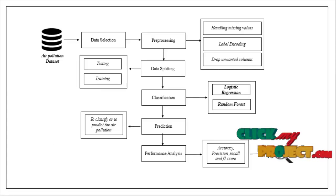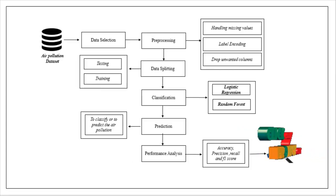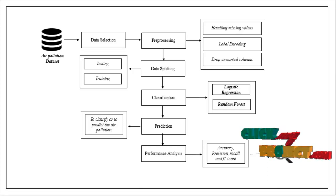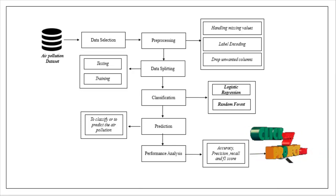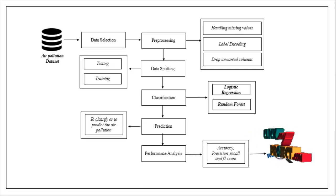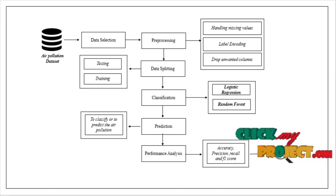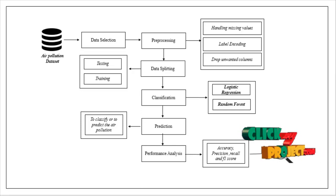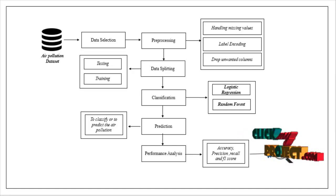Now we are going to see about the flow of our project. This is the flow diagram. First we have to collect our dataset. The dataset name is the air pollution dataset. The dataset was collected from dataset repositories like UCI, Kaggle, GitHub, and so on.